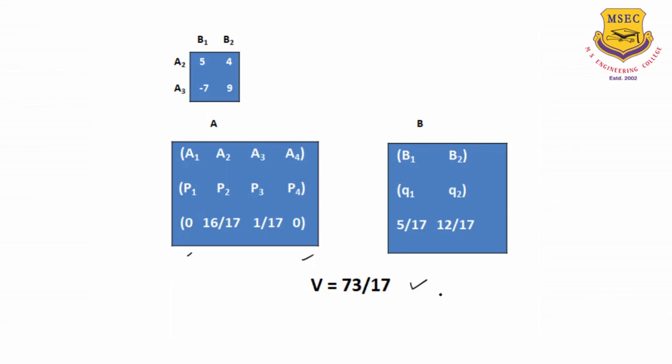I hope you have understood how to solve a game theory problem. When you have a saddle point, you determine it using the max-min principle. When you don't have a saddle point, you play the mixed strategy and find out the probabilities with which each player plays the different strategies. We also learned how to solve the problem using graphical methods: we plot the graph, reduce the matrix into a 2x2 matrix, use the algebraic method to solve for the probabilities, and determine the value of the game and the strategies associated with it.